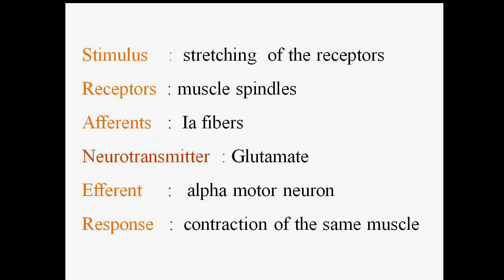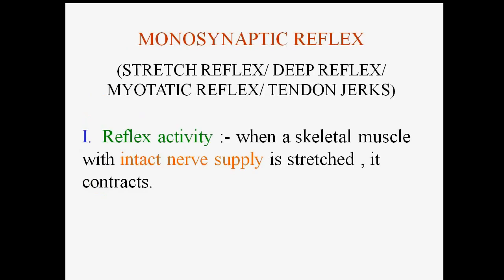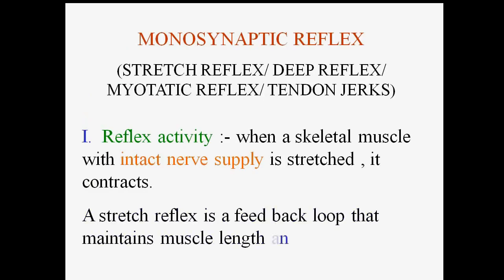The neurotransmitter is glutamate, the efferents are alpha motor neurons, and the response is contraction of the same muscle. In this reflex arc, afferents are Ia fibers and efferents are alpha motor neurons. The stretching of the receptor — that is, stretching of the muscle — causes contraction of the same muscle, which is known as the monosynaptic reflex, stretch reflex, deep reflex, myotatic reflex, or tendon jerk.